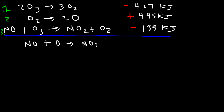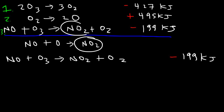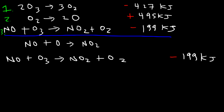Focus on equation 3 first — NO is already on the correct side, so rewrite equation 3 as-is: NO + O₃ → NO₂ + O₂, ΔH = -199 kJ. NO₂ is also already on the correct side. Next, focus on atomic oxygen O, which only appears in equation 2. We need O on the left, so reverse equation 2 and multiply by ½: O → ½ O₂, ΔH = -495/2 = -247.5 kJ.